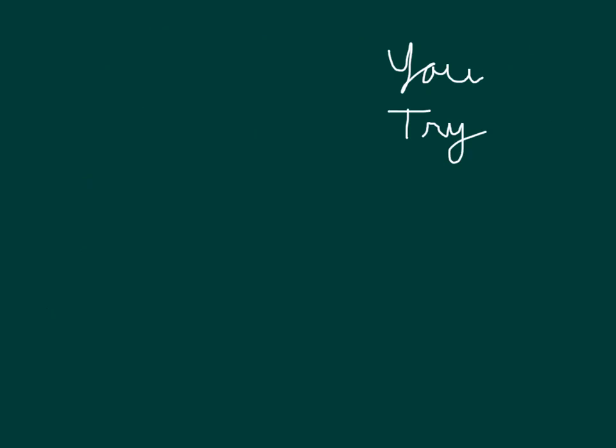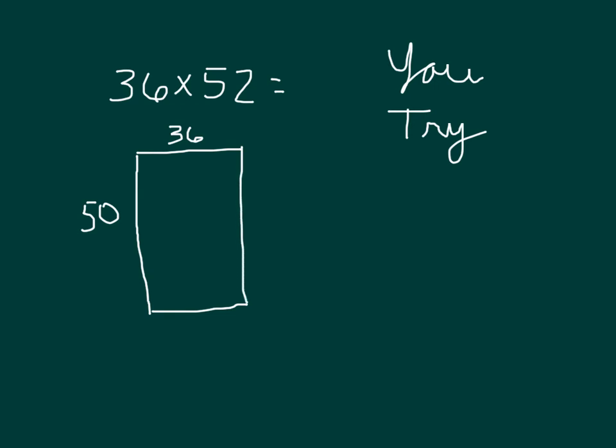You go ahead and try. Here is a problem for you. 36 times 52. I'll go ahead and help you start to draw an area model. 36 and 50 there for the area model, and then we still have 2. Go ahead and use a standard algorithm as well. Make sure to put what you need to put into the boxes. On your standard algorithm. Here we go. Work that out. Pause the video.